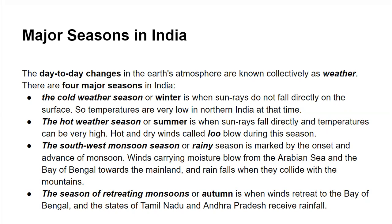The next one is the southwest monsoon season, or rainy season. This season is marked by the onset and advance of the monsoon. Winds carry moisture from the Arabian Sea and the Bay of Bengal toward the mainland. The winds which come from the Indian Ocean, when they enter the Indian Peninsula, divide into two branches — the Arabian Sea branch and the Bay of Bengal branch. When they collide with the mountains of these branches, rainfall occurs.